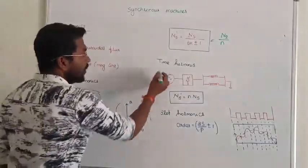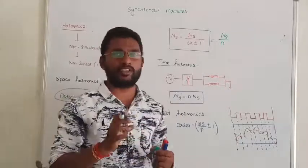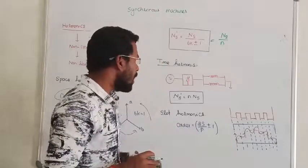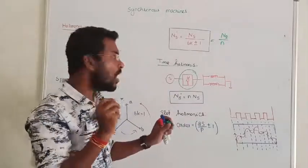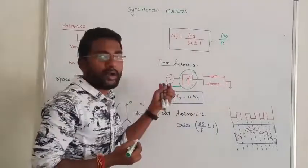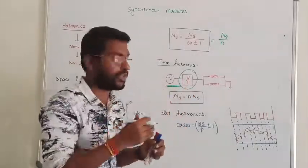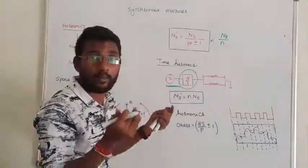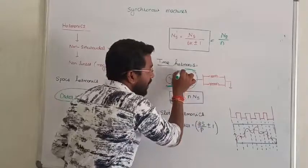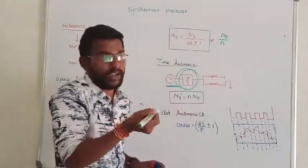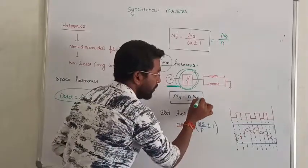Next, time harmonics. In time harmonics, we are talking about the power supply of the machine. These harmonics are not being generated inside the synchronous machine. The source is generating them, or the source is getting affected by power electronics parameters. These power electronics parameters inject harmonics over time — that is called time harmonics. When your machine is getting affected by time harmonics, the new synchronous speed of the machine becomes the order of the harmonics multiplied by the synchronous speed.